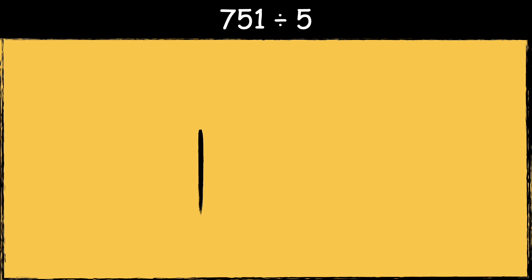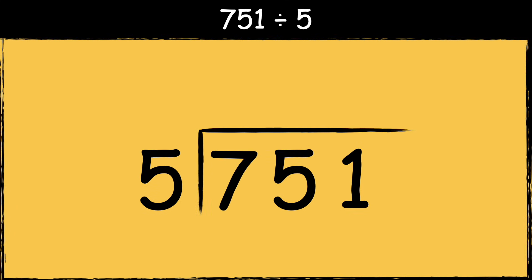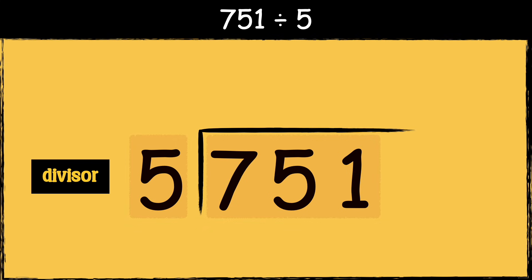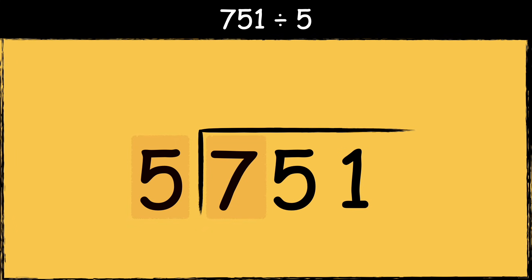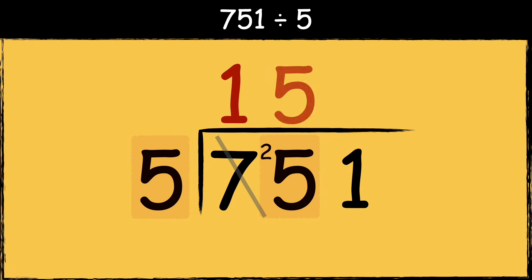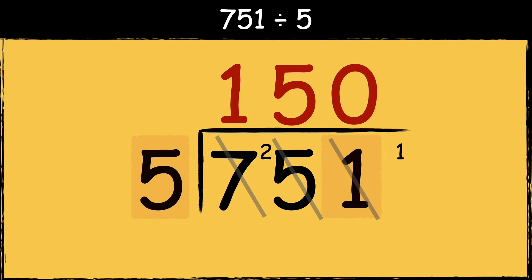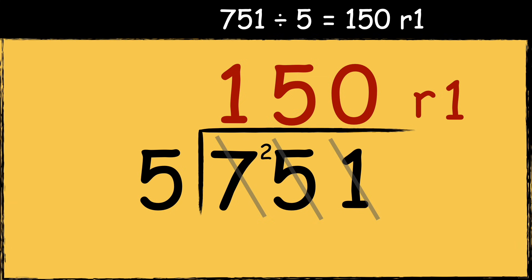Here's the next example: 751 divided by five. So we need to find out how many times the divisor fits into these numbers. Five goes into seven once with two left over. Five goes into 25 five times. And five goes into one zero times, so we have one left over. As there are no more numbers to divide, this left over one is the remainder. So the answer is 150 remainder one.